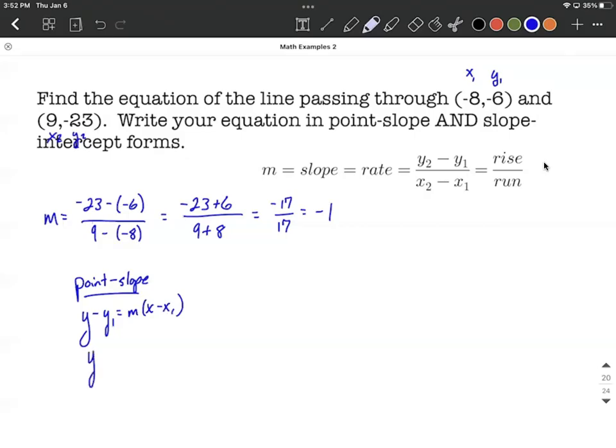So filling in, I'm going to use the exact same x1 and y1 from that point up in the very top right. So I'm going to say y minus, my y1 value is negative 6, equals the slope m that we just calculated as negative 1. And then x minus our x1 value we said was negative 8.